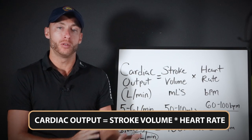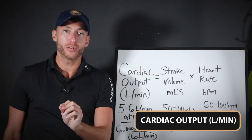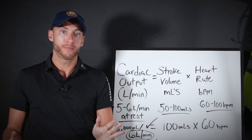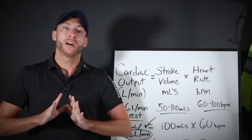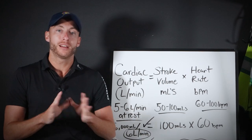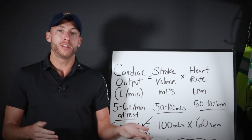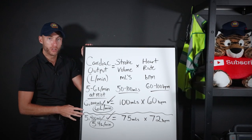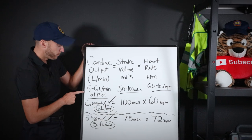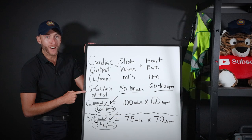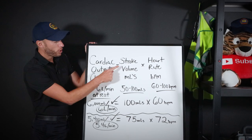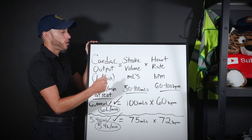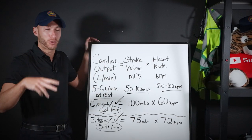Cardiac output is in liters per minute; one liter equals 1,000 mLs. Stroke volume is the amount of fluid moved forward by the ventricles per beat; heart rate is how many times your heart beats in a minute. Normal values: cardiac output is 5 to 6 liters per minute at rest; stroke volume is 50 to 100 mLs; heart rate is 60 to 100 beats per minute.